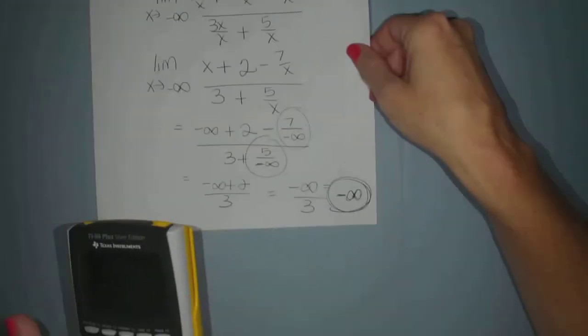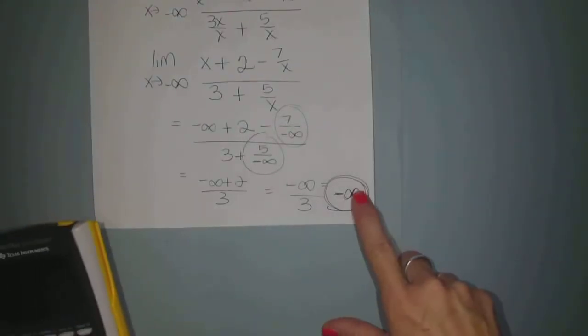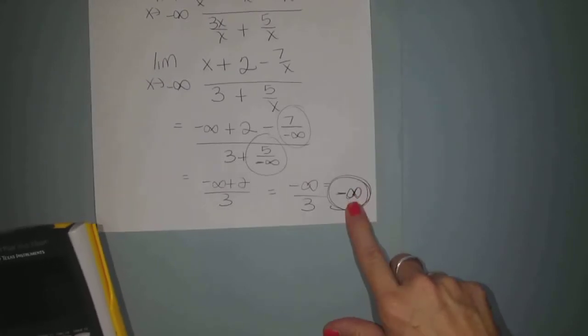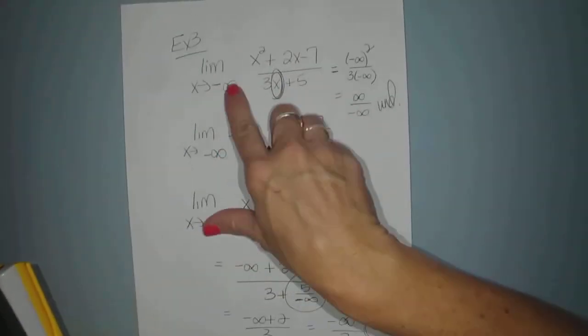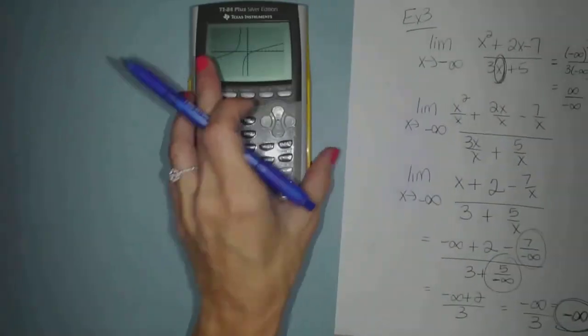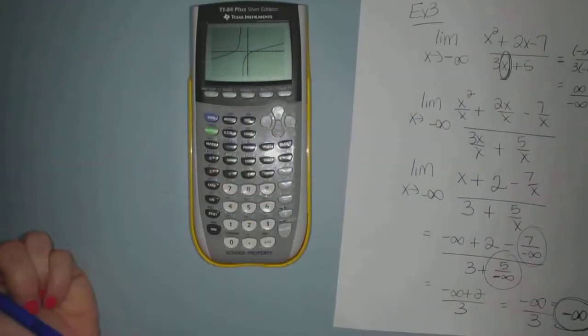So it makes sense that my y values are getting smaller and smaller and smaller as my x values get smaller and smaller and smaller. So this just kind of confirms that, which makes me feel pretty good about my answer.